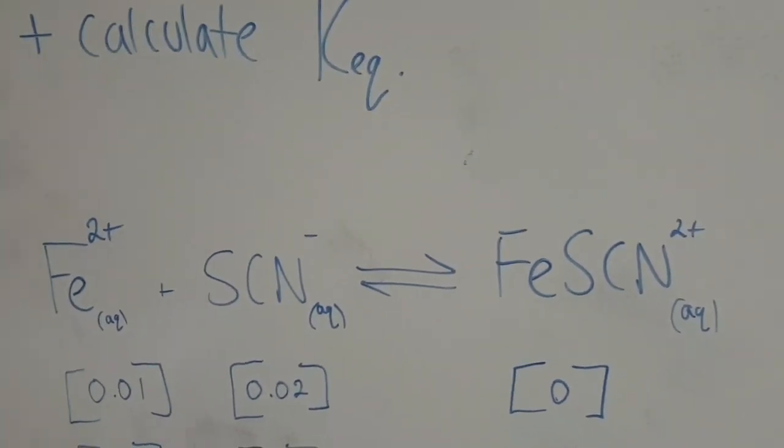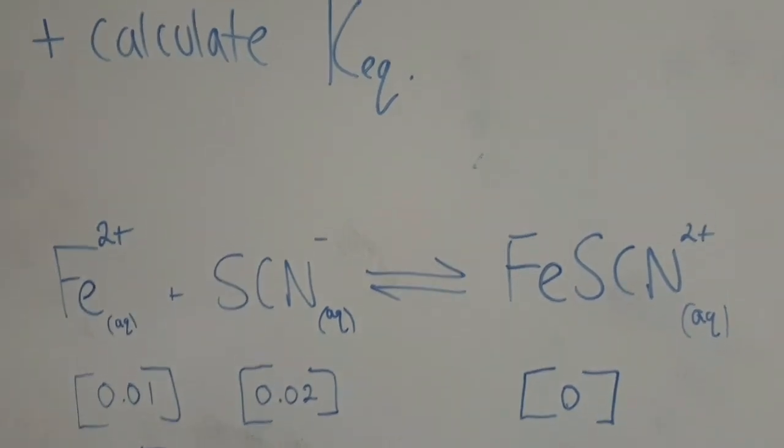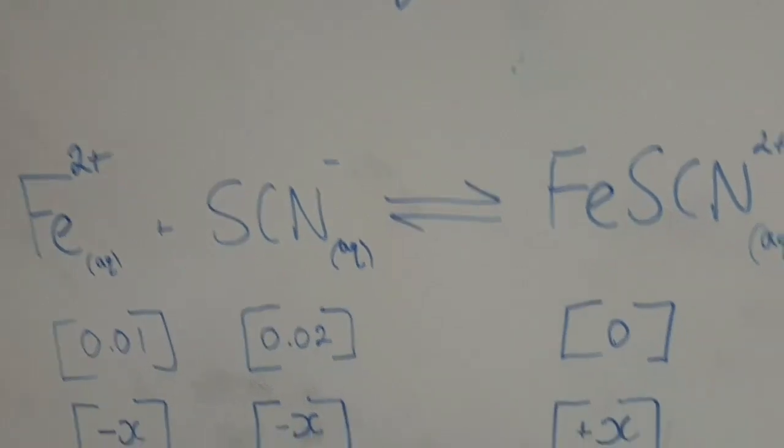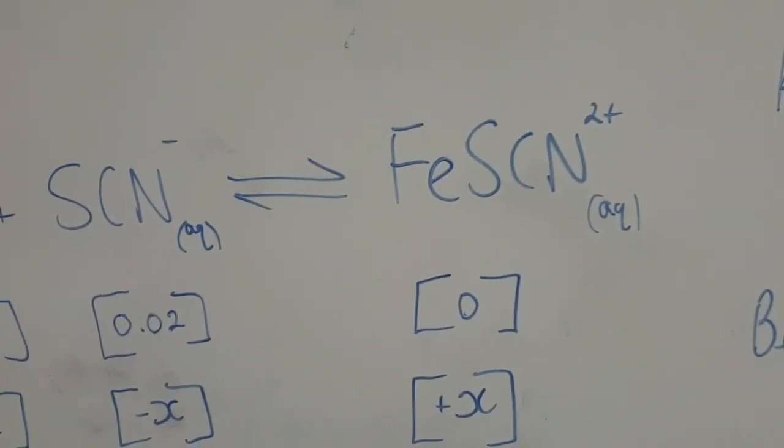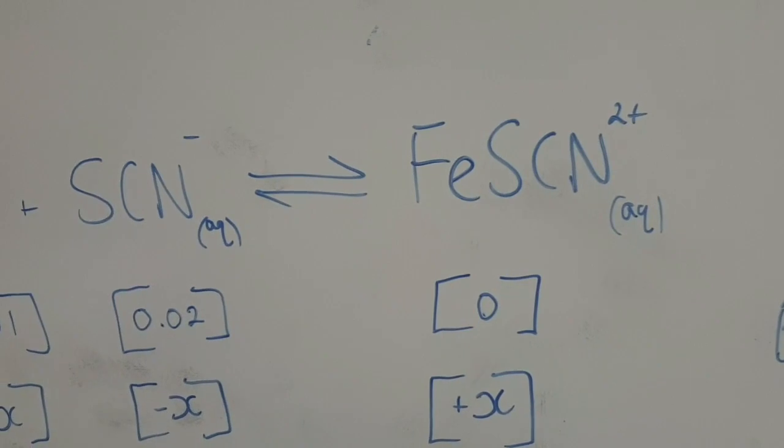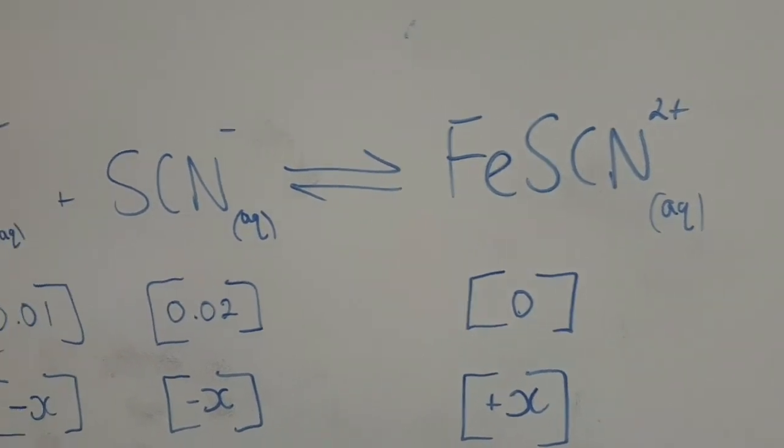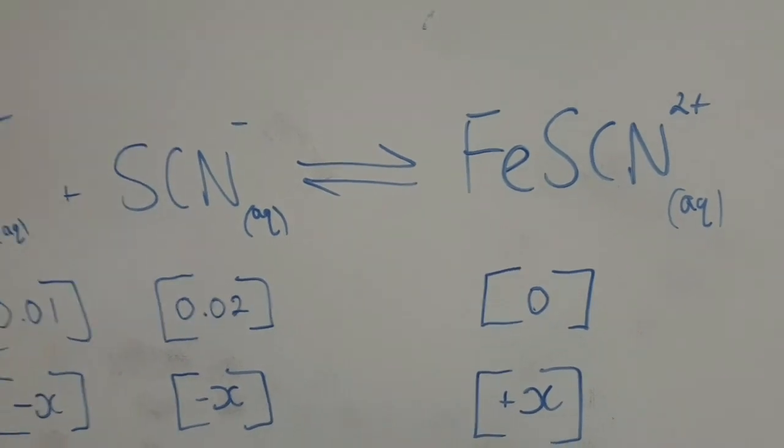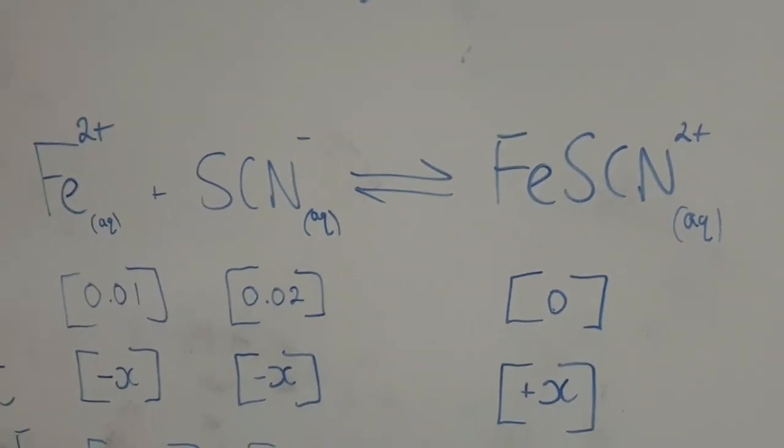The question is, because it's a two-way reaction, we start off with some concentration of iron and thiocyanate, but at equilibrium there will be some amount of iron thiocyanate. The question is, how much is there? And can we calculate the equilibrium constant?